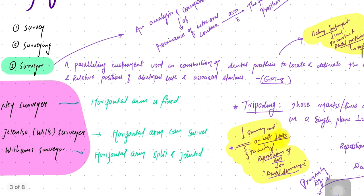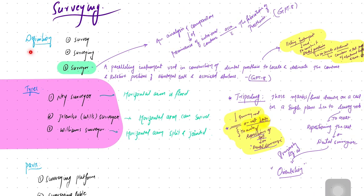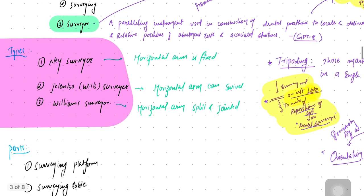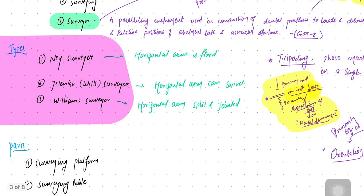There are three types of surveyors. The first is the Ney surveyor, thereafter the Jelenko surveyor (also called the village surveyor), and then the William surveyor. The difference between them: in the Ney surveyor, the horizontal arm is fixed; in the Jelenko surveyor, the horizontal arm is swivel; and in the William surveyor, the horizontal arm is split and jointed.